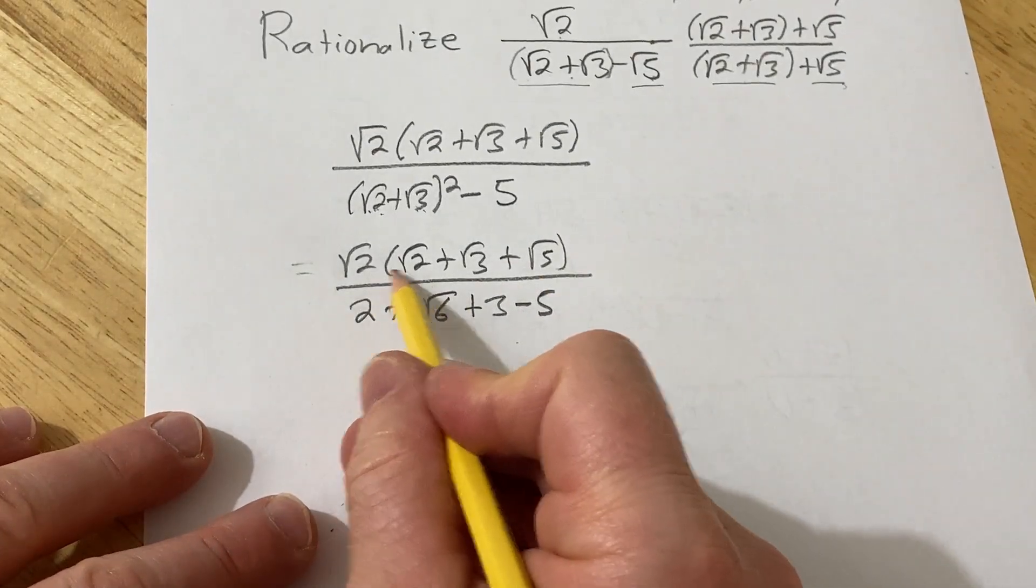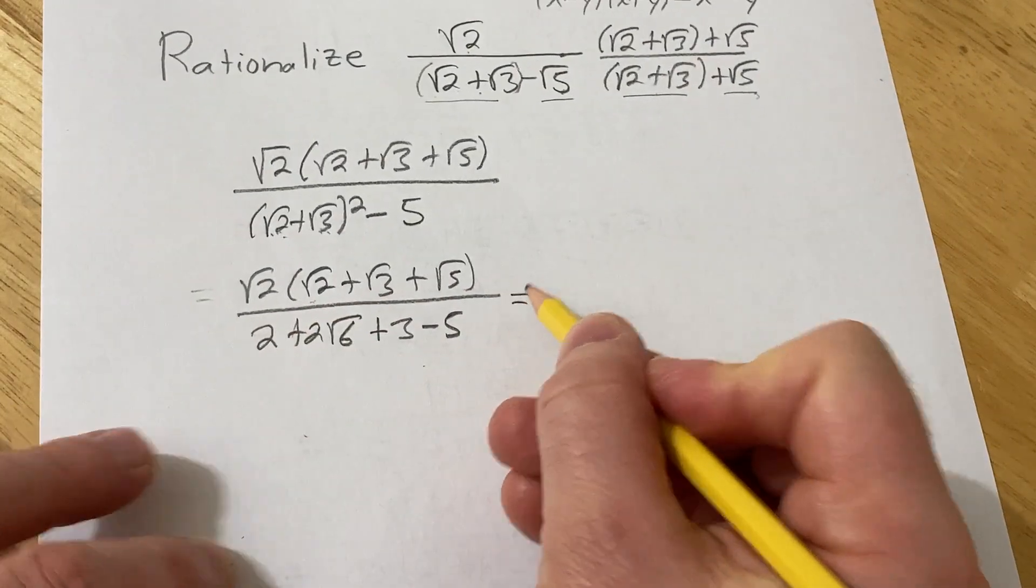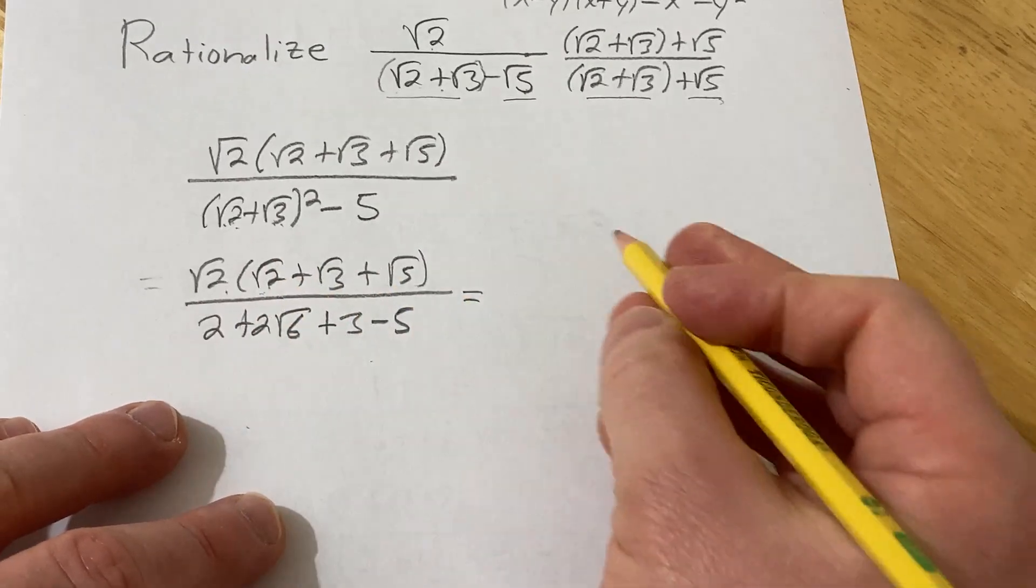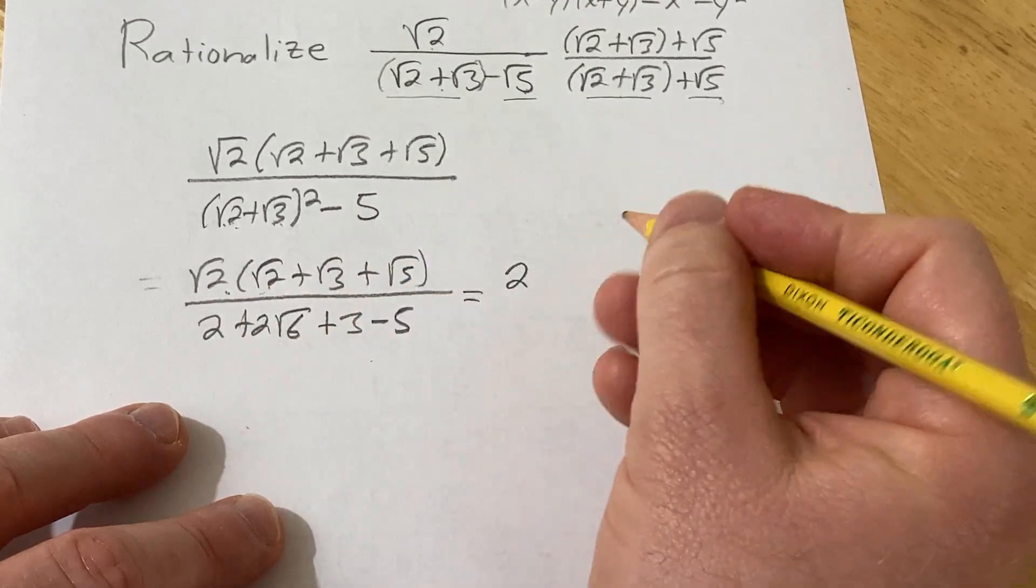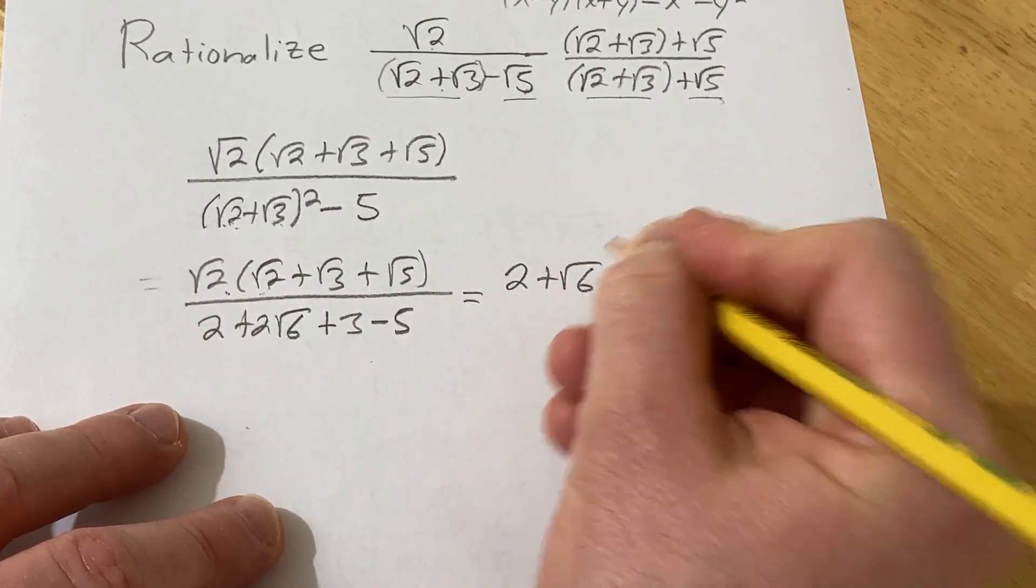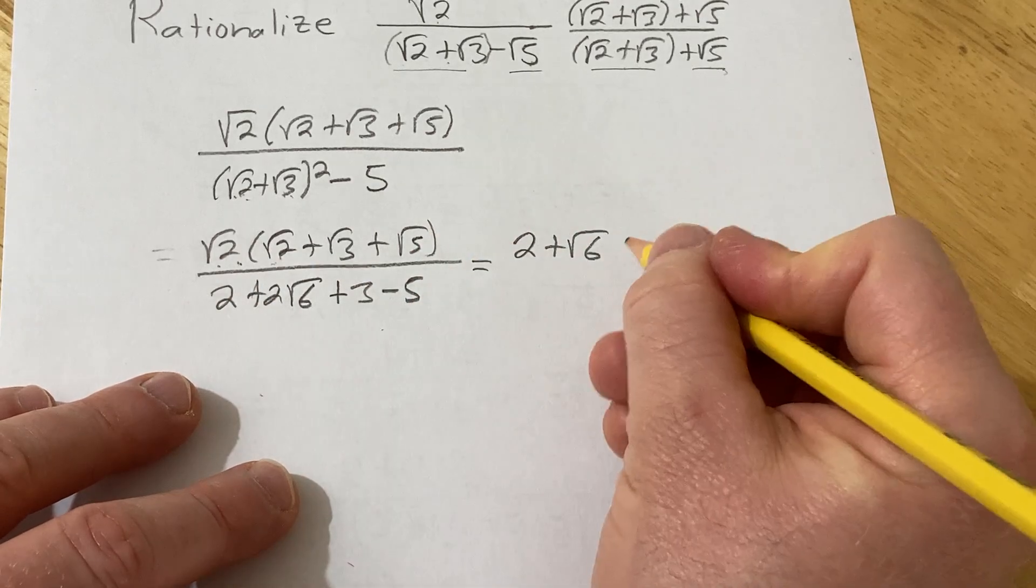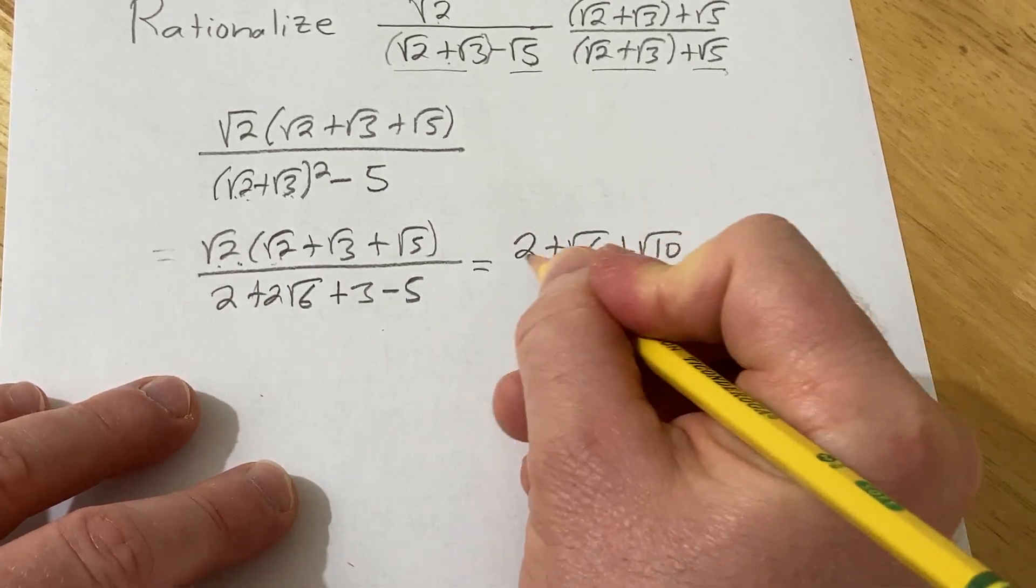And square the last one, so plus 3 minus 5. All right, I'm convinced. I think I'm going to go ahead and distribute the square root of 2 here. So this is going to be square root of 2 times square root of 2 is 2. That's cool. Square root of 2 times square root of 3 is square root of 6. Pretty cool. Square root of 2 times square root of 5 is square root of 10 over.